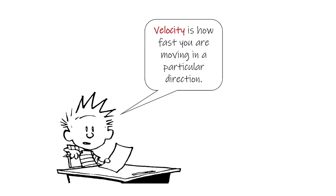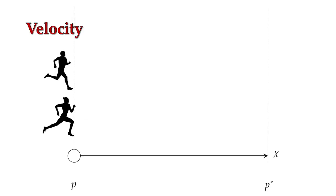With that out of the way, let's talk about velocity. Velocity is how fast you are moving in a particular direction. Because we say 'in a particular direction,' realize that when we're talking about velocity, we're talking about a vector. We have two runners here — runner A up at the top and runner B down at the bottom — and they're going to run a 100-meter race.